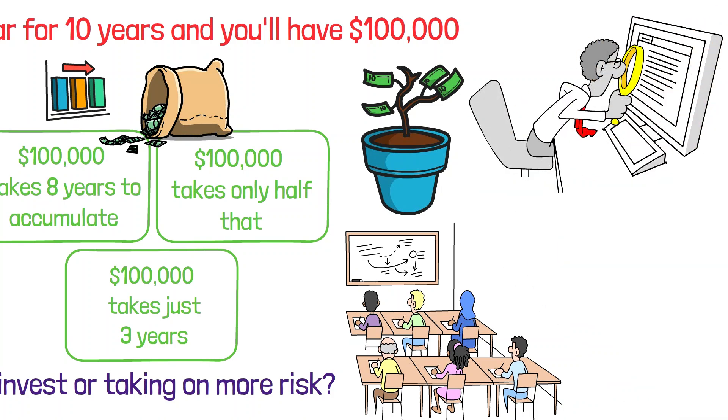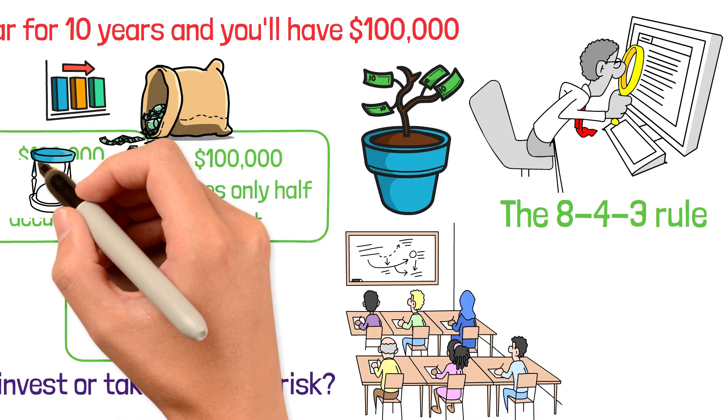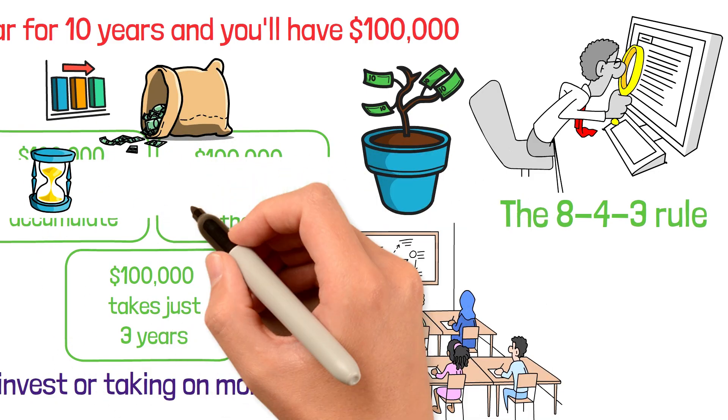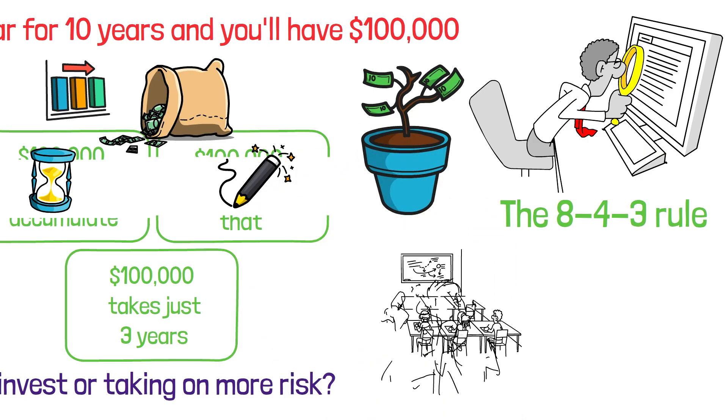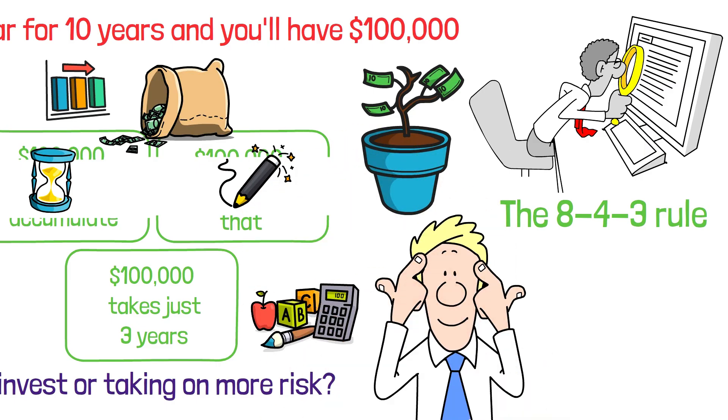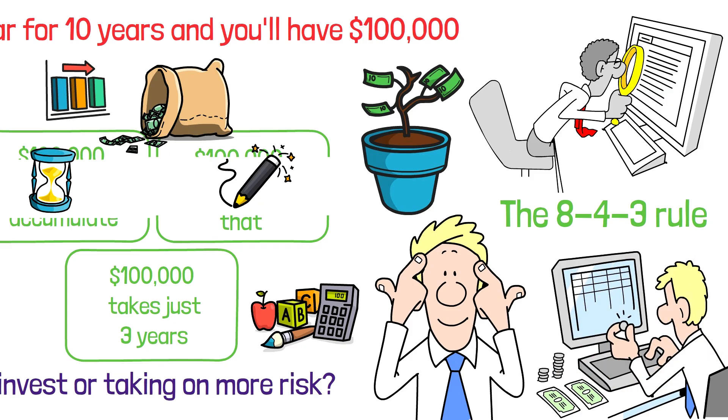What you're about to discover is called the 8-4-3 rule and it's the mathematical secret that explains why the first decade of investing feels painfully slow while the second decade feels like magic. And once you understand this rule and the math behind it, you'll never look at your investment timeline the same way again.